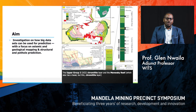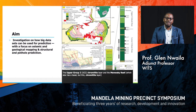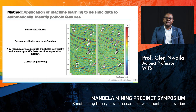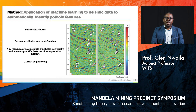For the purpose of this talk, I will use one case study: the Bushveld Igneous Complex, located here in South Africa. The main aim is to investigate how big data sets can be used for the prediction of different attributes such as geological features — in this case, potholes. The most prominent and available method, though difficult to process, is seismic data. We need to apply machine learning to seismic data to automatically identify these potholes.